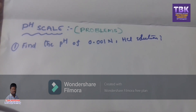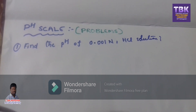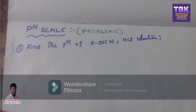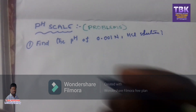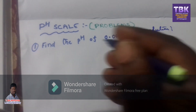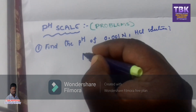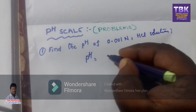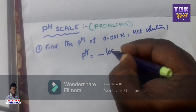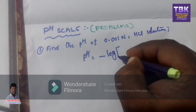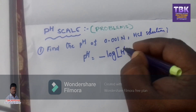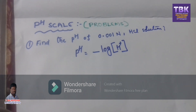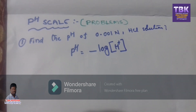The first problem is: find the pH of 0.01 normality HCl solution. What is the formula to calculate the pH? The pH is equal to the negative logarithm of concentration of H⁺ ion. This is the formula used to solve pH problems.